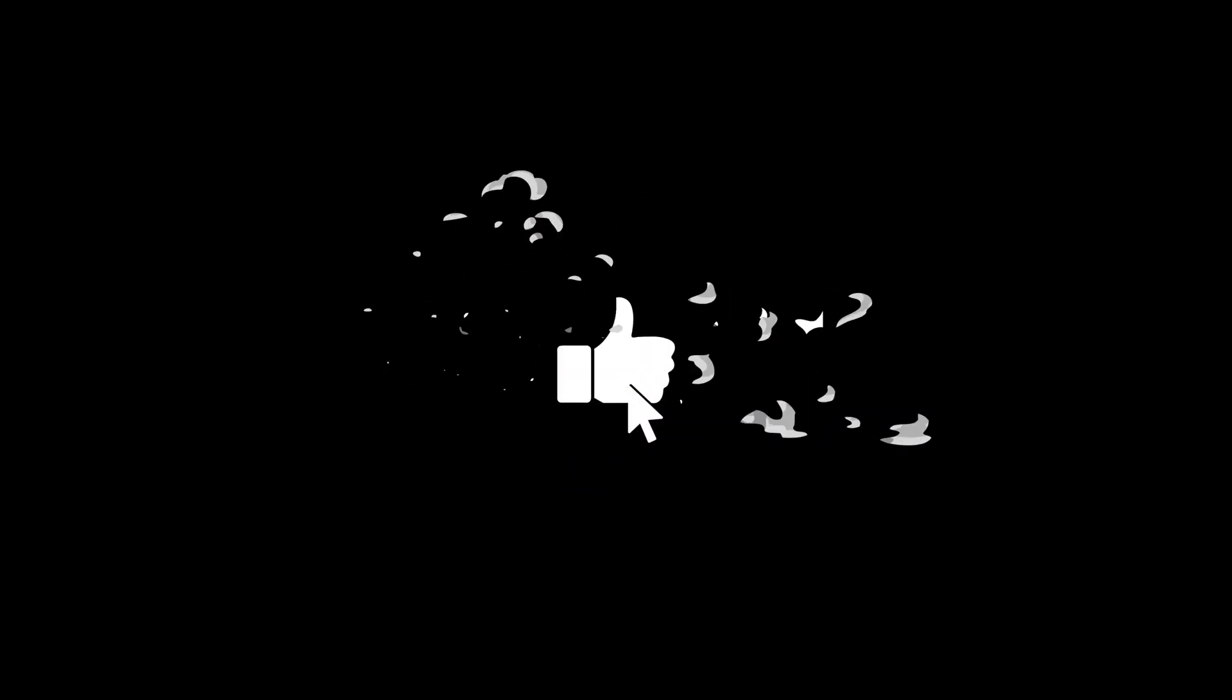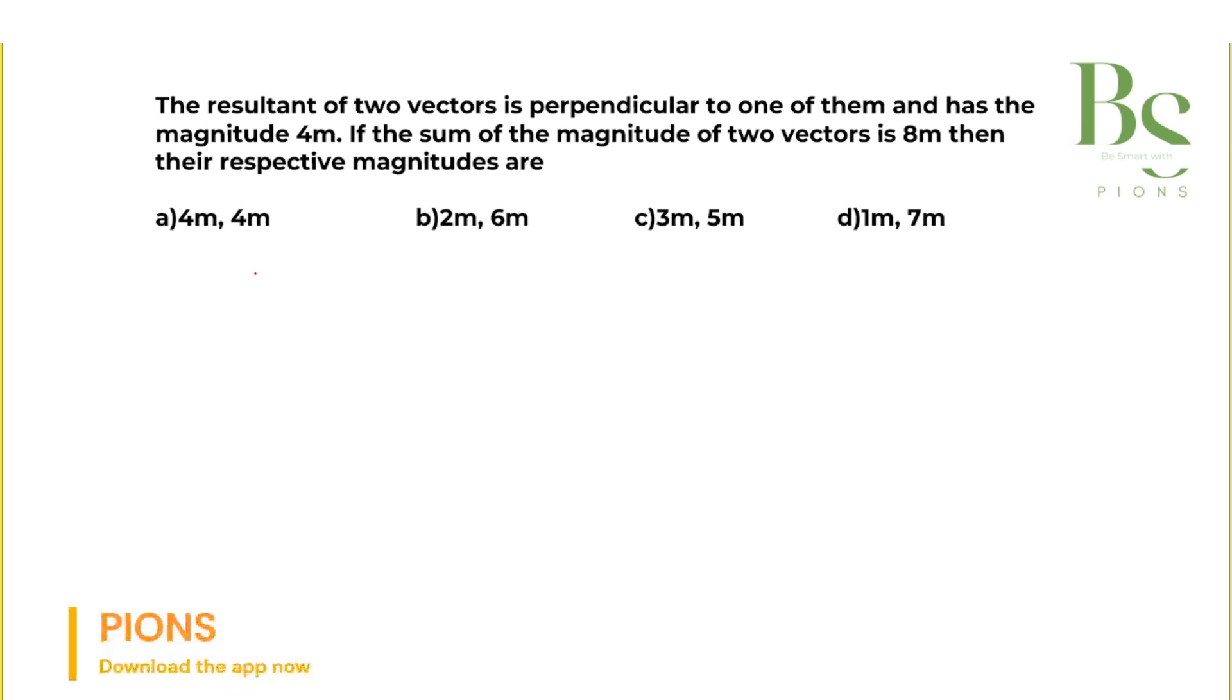The resultant of two vectors is perpendicular to one of them and has the magnitude 4m. If the sum of the magnitude of two vectors is 8 meters, then the respective magnitudes will be how much?